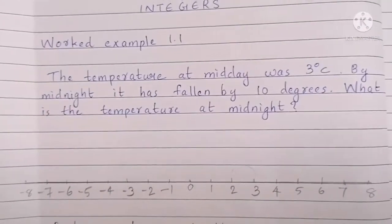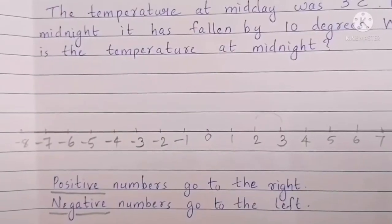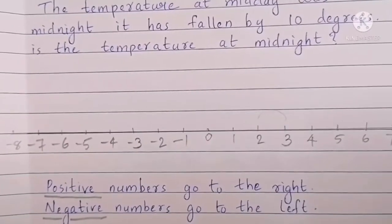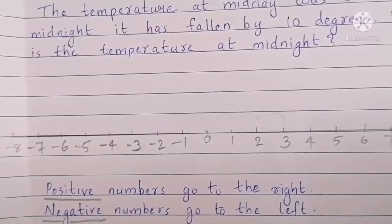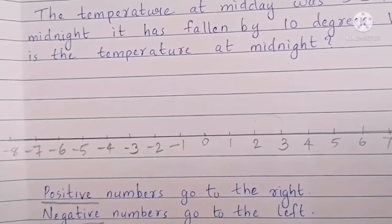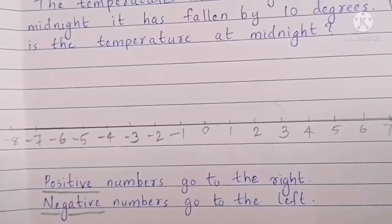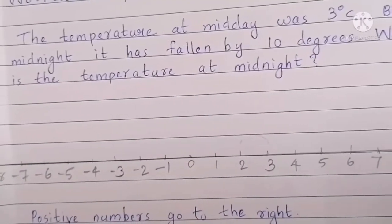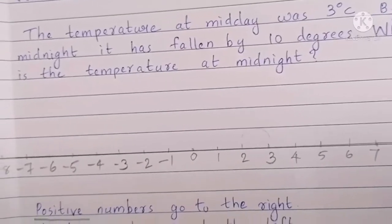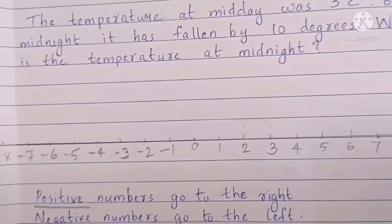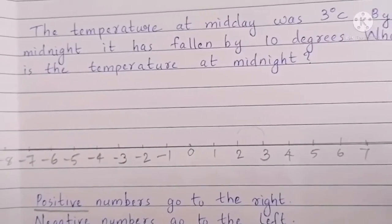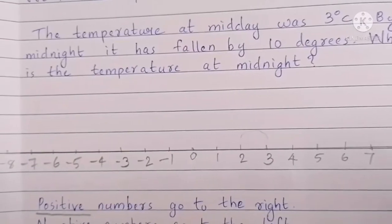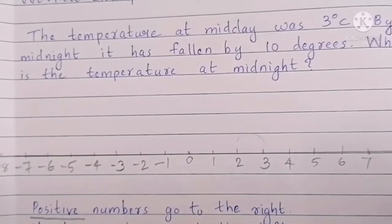Here is the number line. We know that positive numbers go to the right and negative numbers go to the left. From this question we can see that there is a decrease in temperature, so we count 10 to the left from 3 on the number line.